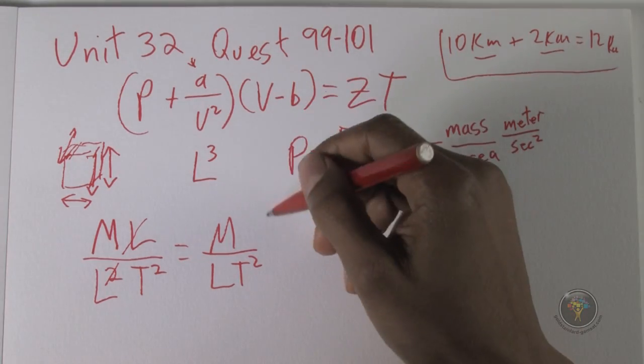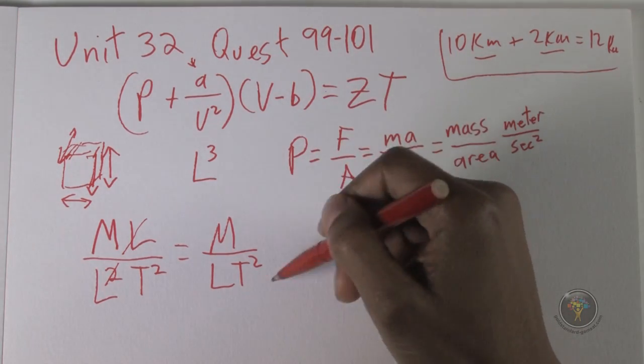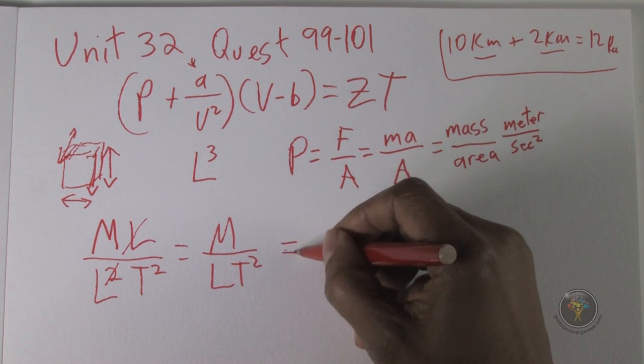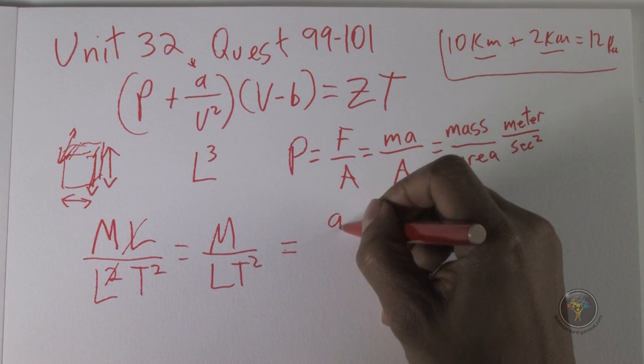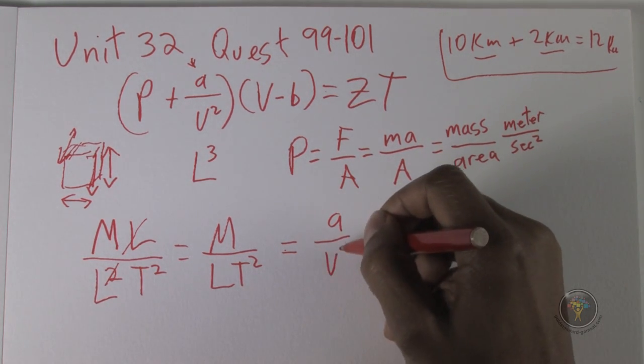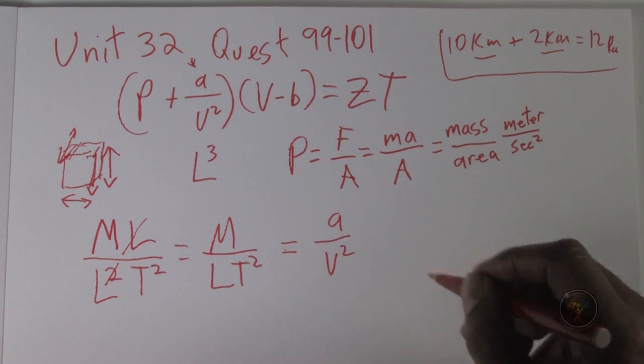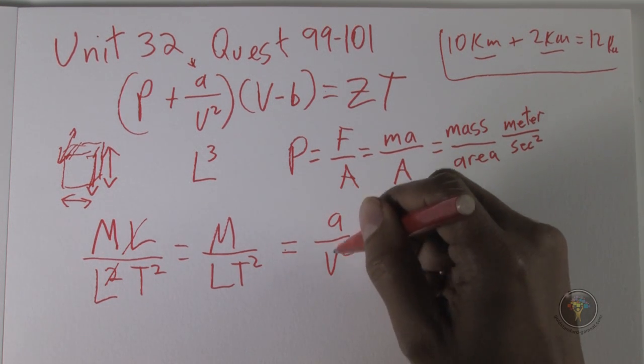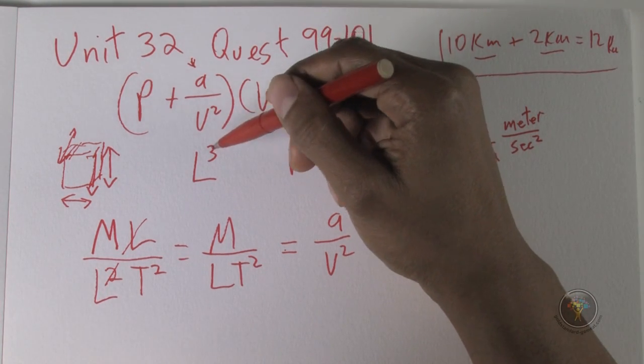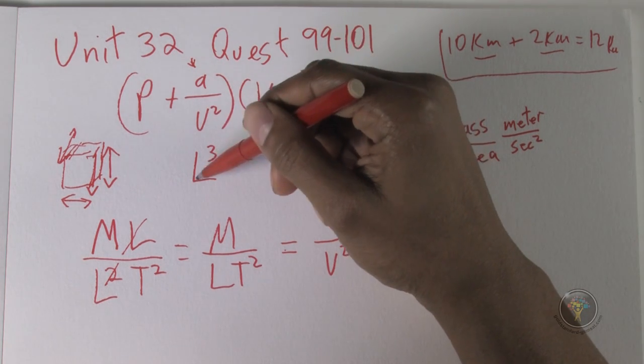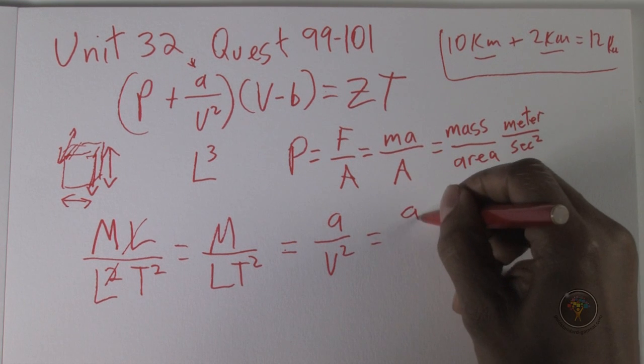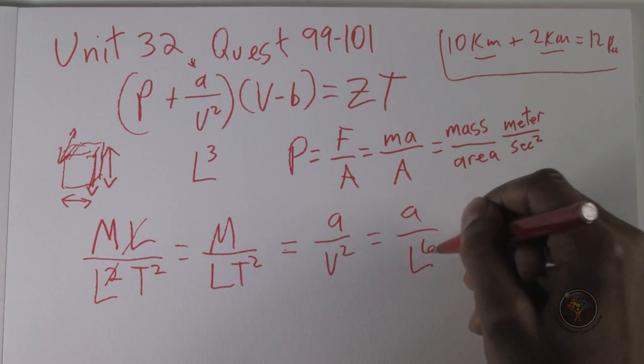Now I'm just crossing that out, and we're left with mass over length time squared. We're almost home now. The only issue is that we just worked out what pressure is, and pressure has the same dimensions as A over V squared. V squared, we know what the dimensions of that is because we already calculated that V is equal to L cubed, so V squared is equal to L to the power of 6.